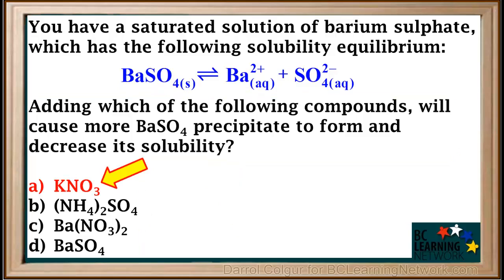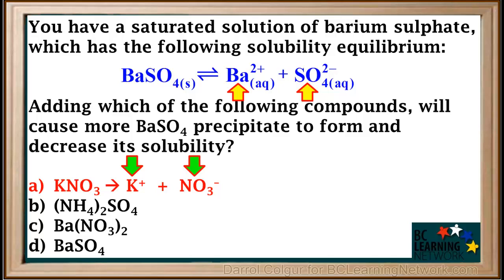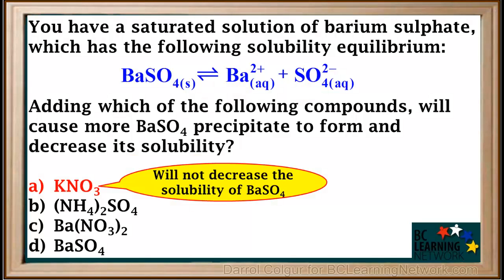We'll start by looking at KNO3. KNO3 dissociates into K⁺ and NO3⁻ ions. Neither of these are common with the ions in the low solubility compound BaSO4. Therefore, adding KNO3 will not decrease the solubility of BaSO4.